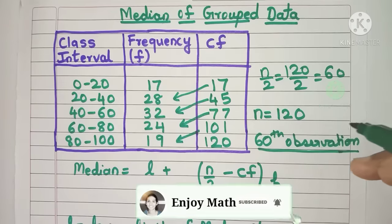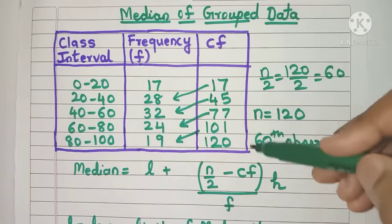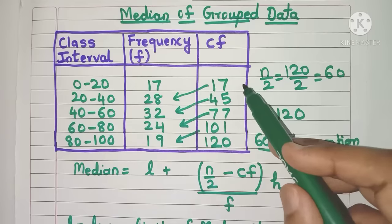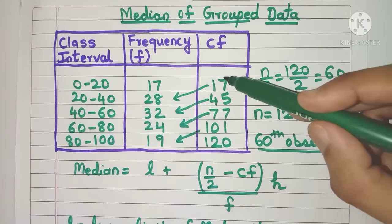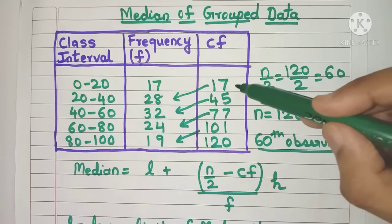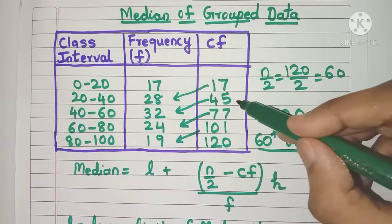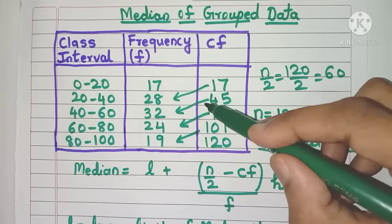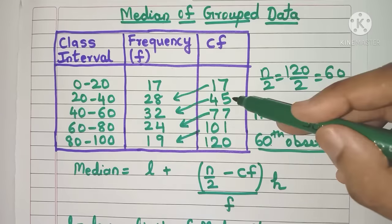How do we know where the 60th observation lies? In which class interval does it lie? For that, we need to use the CF column. Let's start from the first class interval. The CF is 17, meaning observations 1 to 17 lie in this class. So the 60th observation obviously will not lie here. Here also observations 18 to 45 lie in this class, so 60 will not be here.